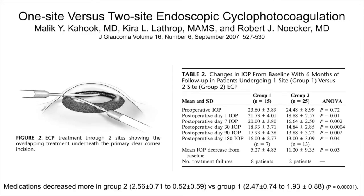I keep referring to 360 degrees of treatment. We did a study at the University of Pittsburgh looking at the utility of two-site versus one-site ECP. Two-site was to treat 360 degrees; one-site was to treat approximately 270 to 300 degrees. We noted that medications decreased more significantly in the 360-degree treatment group, and we also noted a greater reduction in intraocular pressure in the patients with 360 degrees of treatment.